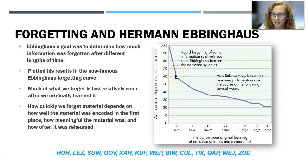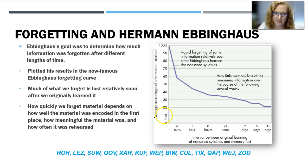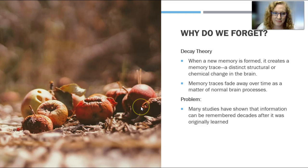How quickly we forget material depends on how well the material was encoded in the first place, how meaningful the material was, and how often it was rehearsed. Did you listen intently during lecture and take notes? That'll help to encode it. Did you make it meaningful to yourself? If we're thinking about memory, you might think about your own study habits, your grandparents, or somebody you knew who got a bump on the head. And this is key: how often it was rehearsed. If you rehearse, the forgetting curve doesn't go down as deeply.